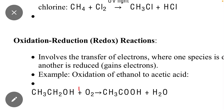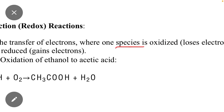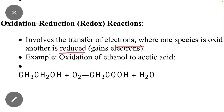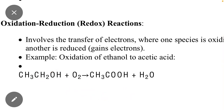The last type is redox reaction, which involves the transfer of electrons where one species is oxidized and another species is reduced. In simple words, oxidation-reduction reactions are called redox reactions. For example, the oxidation of ethanol converts it into acetic acid, and the reduction of acetic acid converts it back into ethanol. A reaction in which oxidation and reduction occur simultaneously is known as a redox reaction.